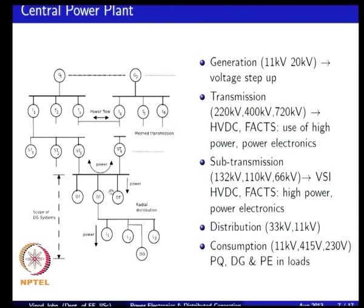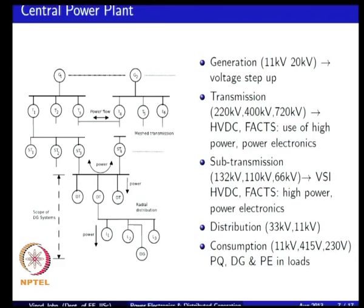When you look at distribution, traditionally it is 11 kV or 33 kV, and at the consumption point it is typically 415 volts three-phase or 230 volts single-phase. The traditional role of power electronics has been in loads — switch mode power supplies, motor drives — at the consumption point. But when you are talking about distributed generation, you are talking about potentially connecting at the consumption level or at the distribution level.